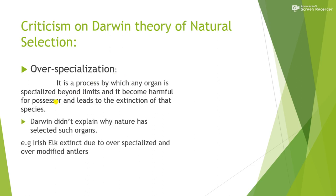The sixth criticism is over-specialization. Over-specialization is a process by which any organ is specialized beyond limits, and it becomes harmful for the possessor and leads to the extinction of that species. So over-specialization is when any organ becomes so specialized that it becomes harmful for the organism in which it is present and causes its extinction.